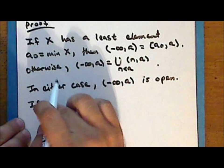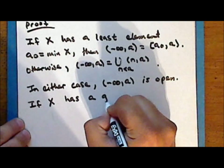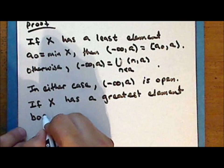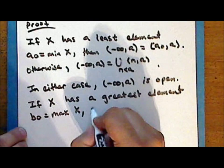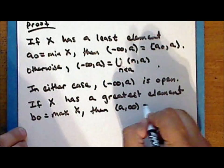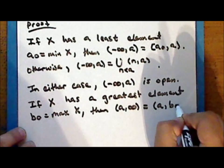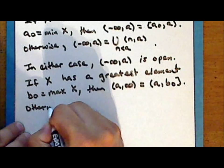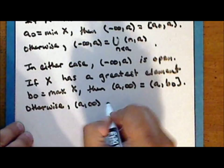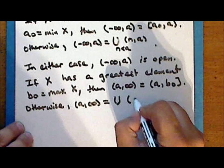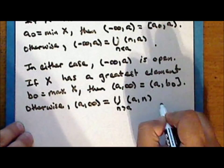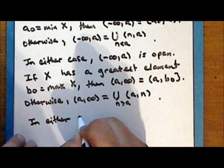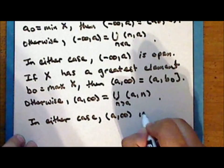If the underlying set X has a greatest element, which we will call b-sub-nought, then the ray from a to positive infinity is the half open interval from a to b-sub-nought inclusive of b-sub-nought, which is a basic open set and therefore open. Otherwise, the ray from a to positive infinity is a union of open intervals of the form a to n for all values of n greater than a, so it is a union of basic open sets and therefore is open. So in either case, the ray from a to positive infinity is open.